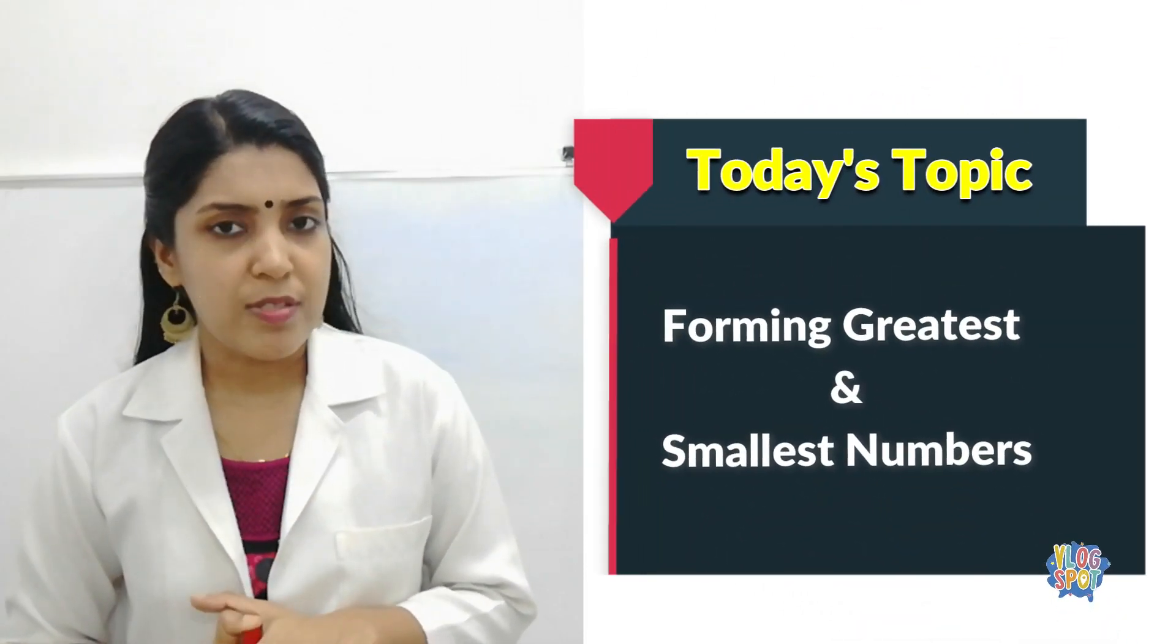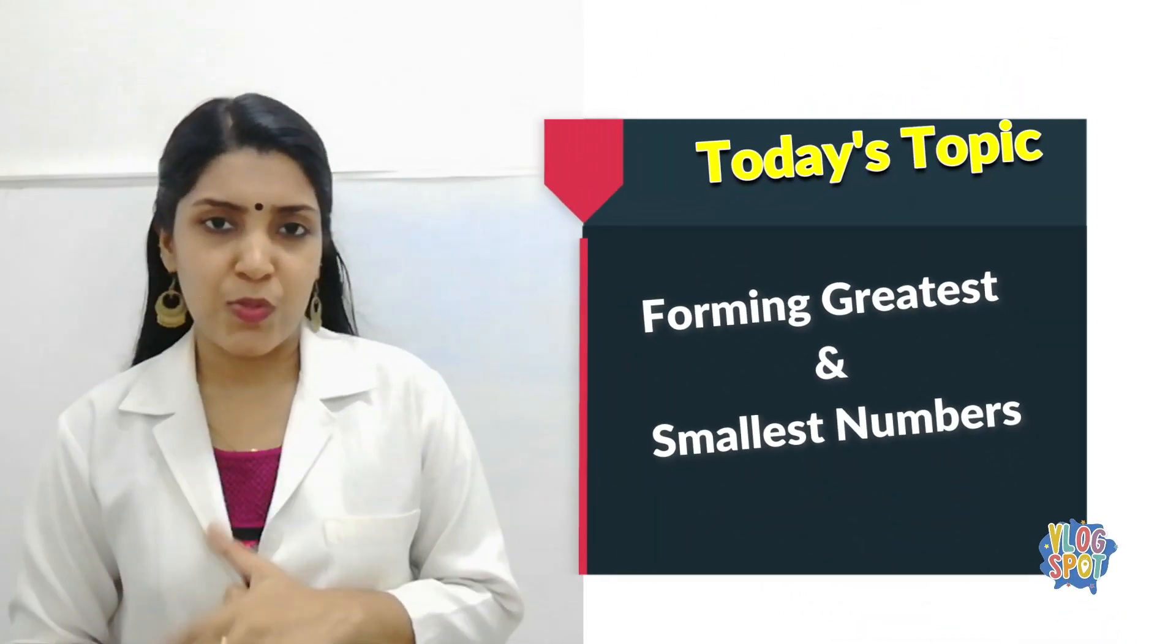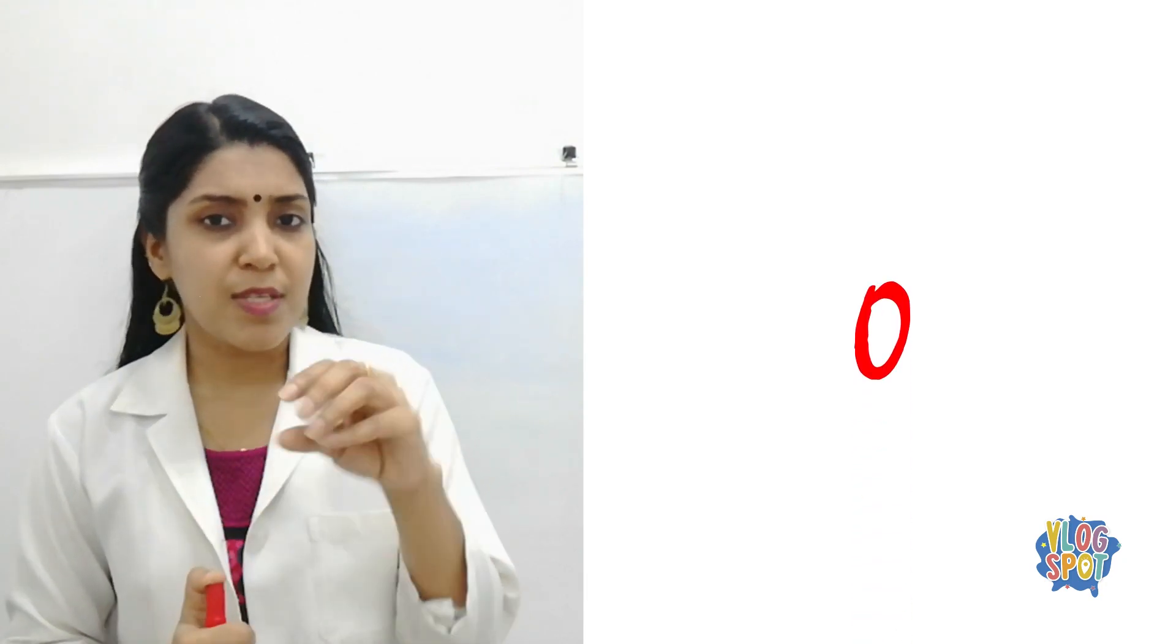Forming greatest and smallest digits, it's very easy to do. Only we should be careful about zero. If zero is one of the digits given, then we should be very careful. Today's topic is about forming the greatest and the smallest number using the given digits. Let's start the topic and welcome to our new session of mathematics.